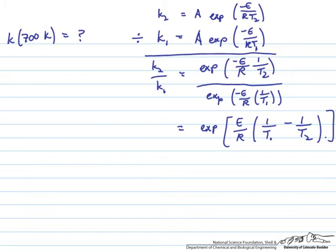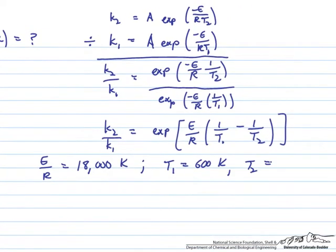Now we need to solve for our new value of k2. E over R we've already determined is equal to 18,000 in units of Kelvin. We know that T1 equals 600 Kelvin and T2 equals 700 Kelvin.